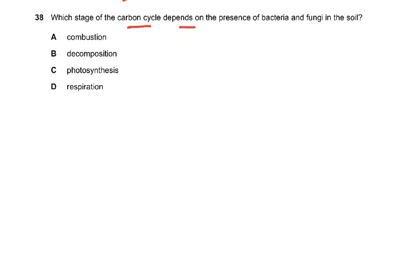Question 38: which stage of the carbon cycle depends on the presence of bacteria and fungi in the soil? The answer is decomposition. Although bacteria and fungi also respire, the stage that specifically requires bacteria and fungi in the soil is decomposition — not combustion (cars), not photosynthesis (plants), and not general respiration by plants and animals.